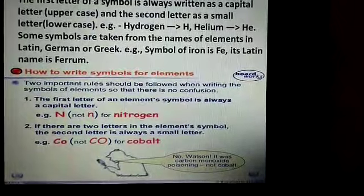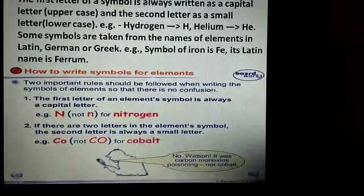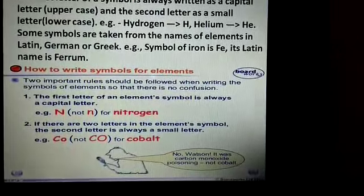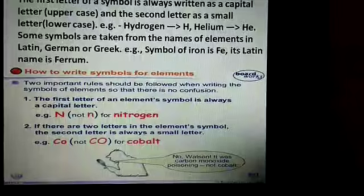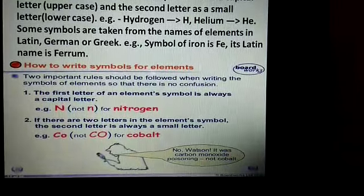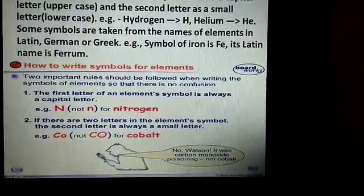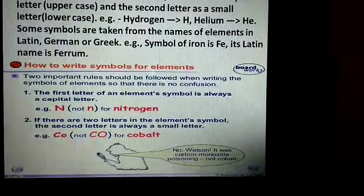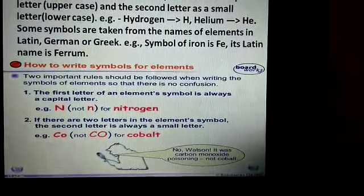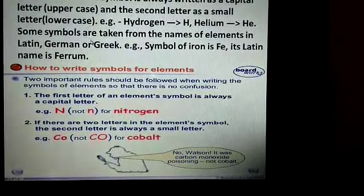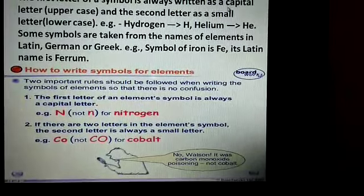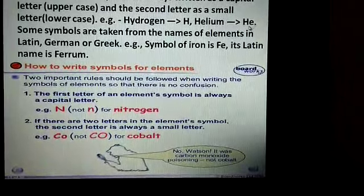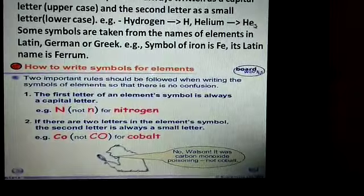Now, how symbols are written? For a symbol of a chemical element, the first letter is utilized as a symbol and is always written as a capital letter. And the second letter, if the symbol contains two letters, then the second letter will be a small letter. For example, hydrogen is H, and for helium the two letters are there, H is capital and E is small.